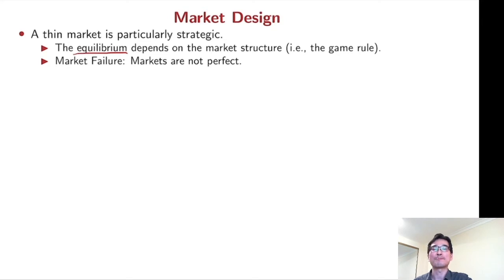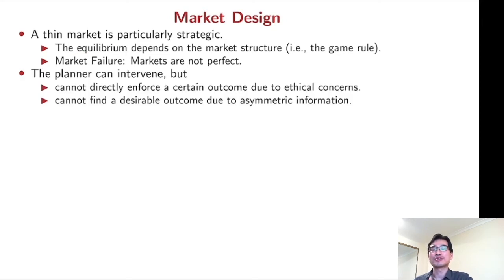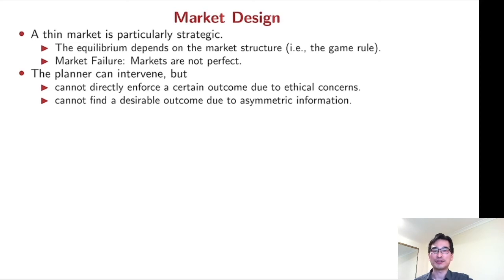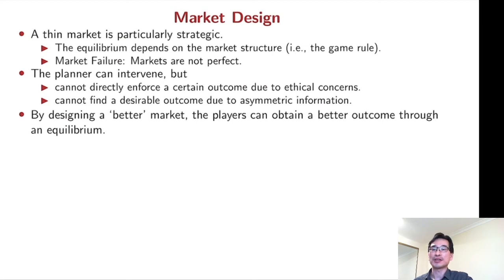Markets are not perfect. Sometimes a planner can intervene to allocate a desirable outcome. But planners sometimes cannot directly enforce a certain outcome due to ethical reasons, and they cannot even find a desirable outcome due to asymmetric information. However, by designing a better market, the players can obtain a better outcome through an equilibrium.